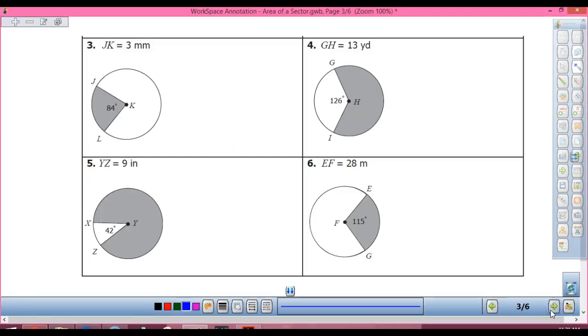If we look at number four. The shaded sector is this part. How do I find the measure of this guy? Yup, so you've got to go 360 minus 126, I get 234.